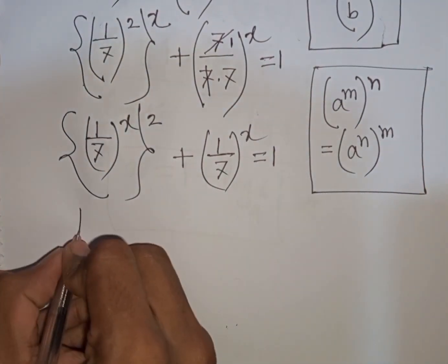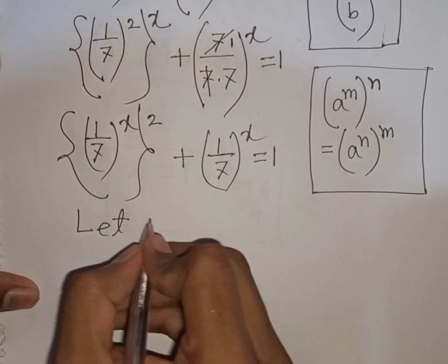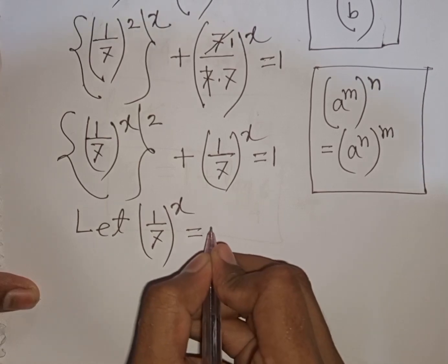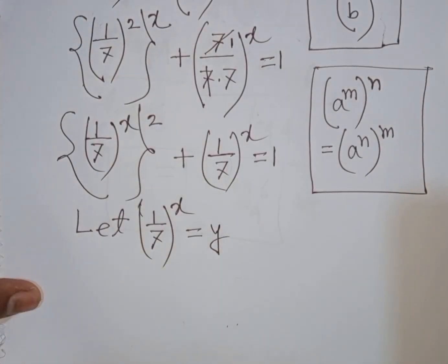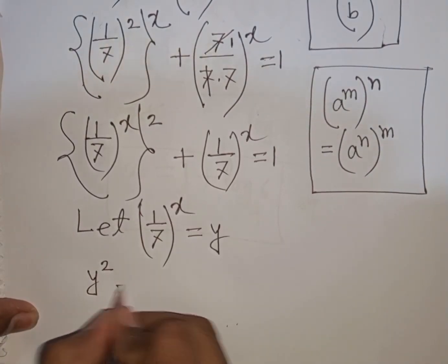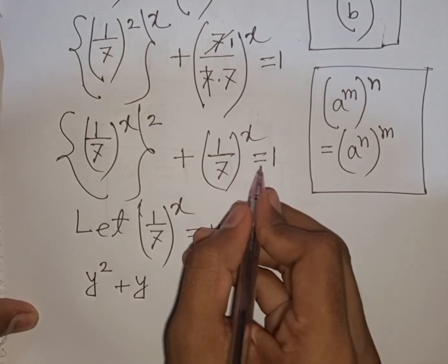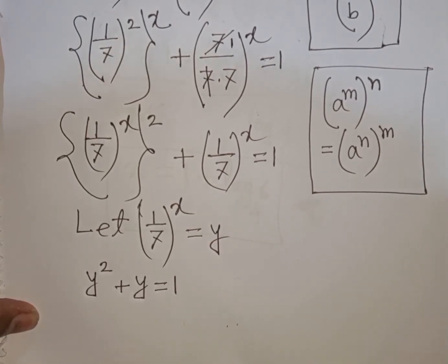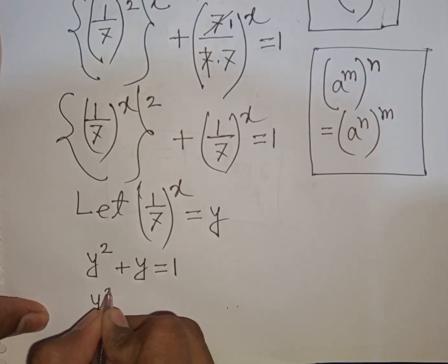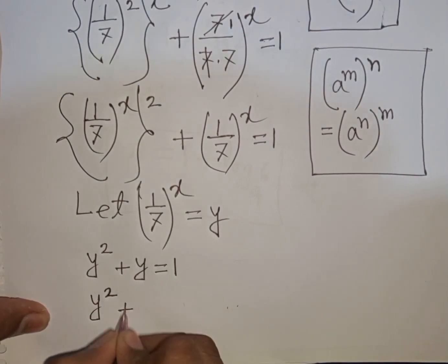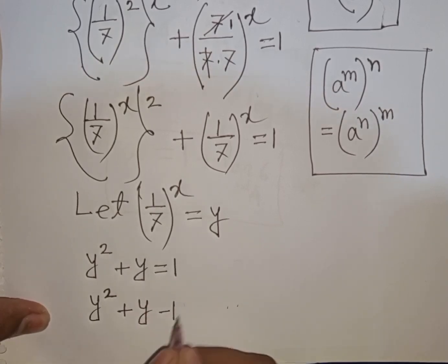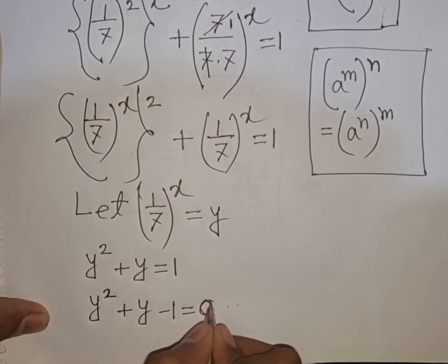We see both terms are (1 over 7) bracket to the power x. So let y equal (1 over 7) bracket to the power x. Our equation becomes y squared plus y equals 1, which rearranges to y squared plus y minus 1 equals 0.